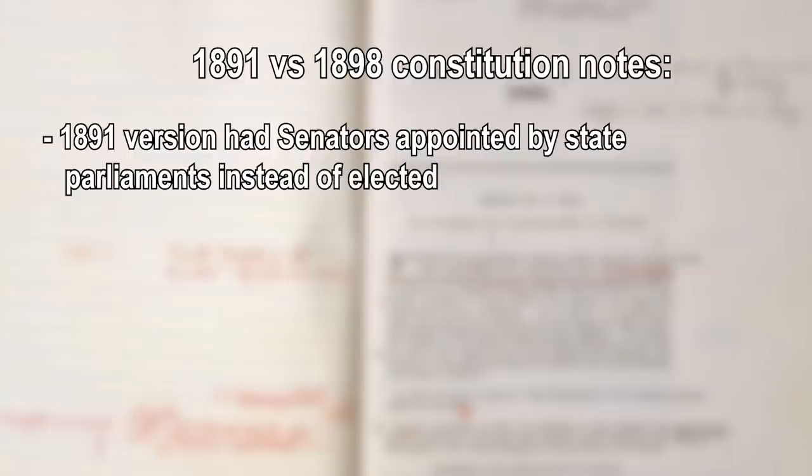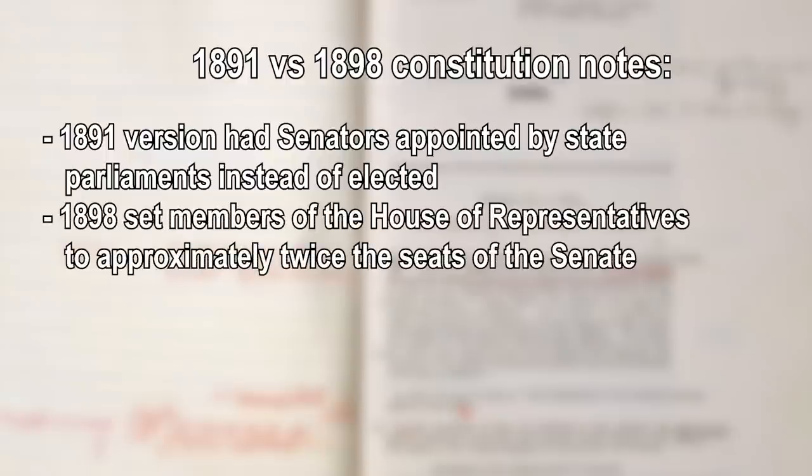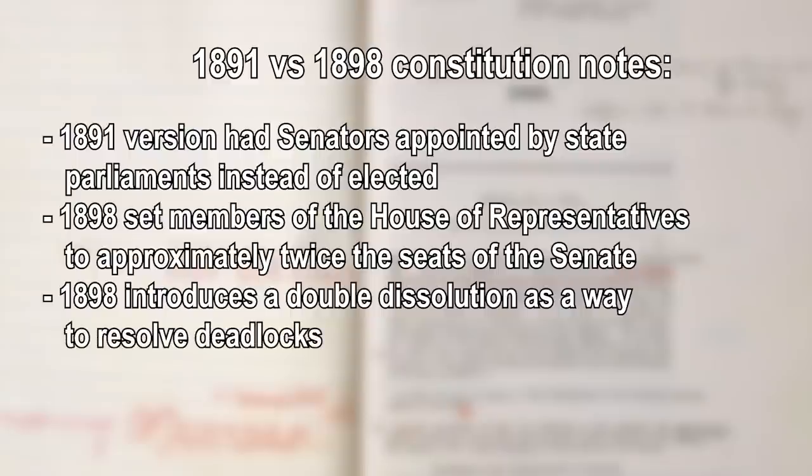We weren't convinced that New Zealand was breaking up with us, so in the constitution we wrote in their name at the start of the list of proposed states, just in case they wanted to come back and join us in the future — and they left us on read. The key writers of the updated constitution were Edmund Barton, Richard O'Connor, and Sir John Downer. A few changes were made: the 1891 constitution would have had senators appointed by the state parliaments instead of elected. Other updates include setting the number of members of the House of Representatives as roughly twice the number of senators, and the possibility of a double dissolution to resolve deadlocks. By March 1898 they were done.